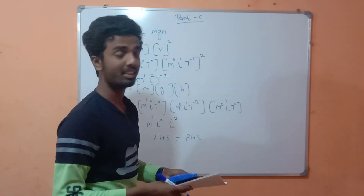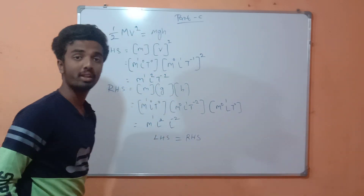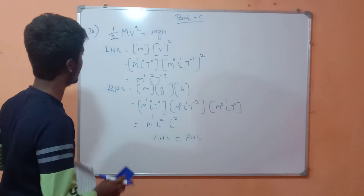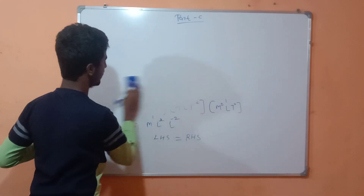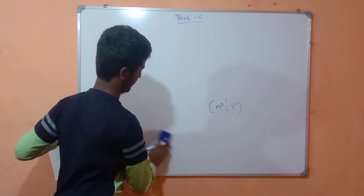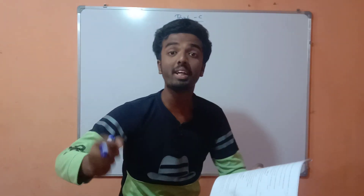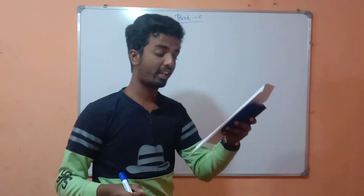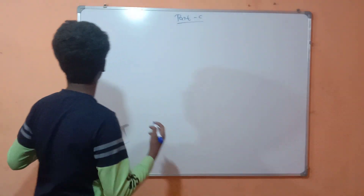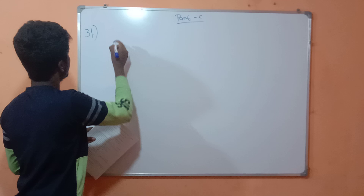Since LHS = RHS dimensionally, the given equation is consistent and correct. Now let us move on to the 31st question. Please pause the video and take notes. Question 31 says: derive the expression for time of flight of a projectile.